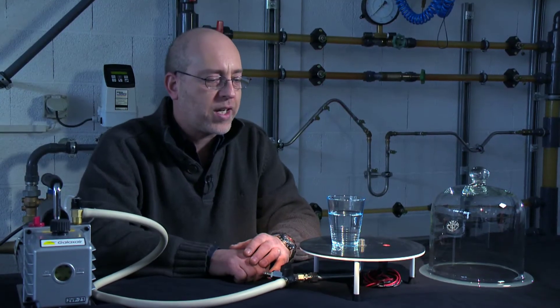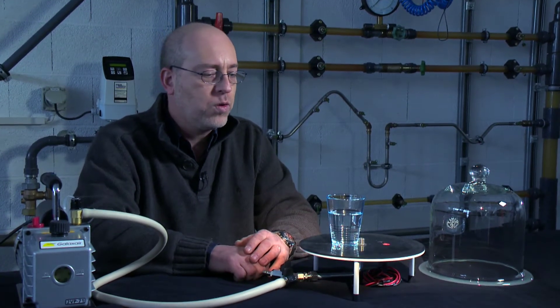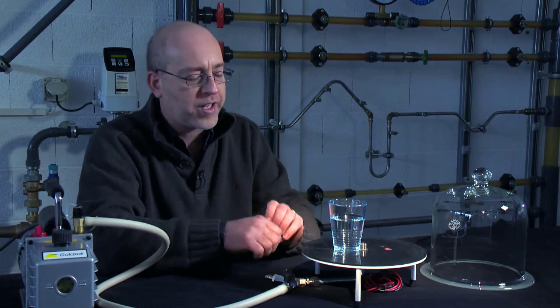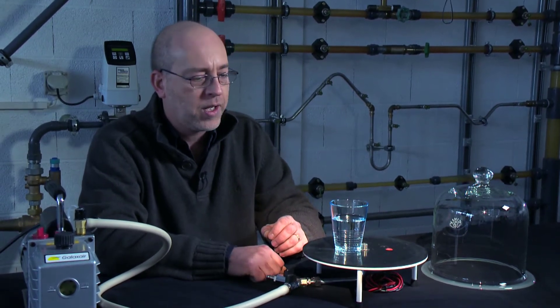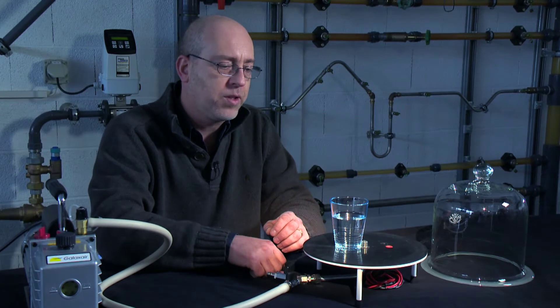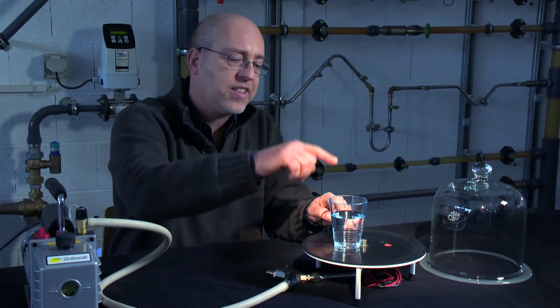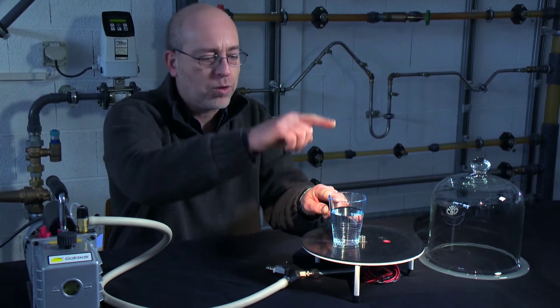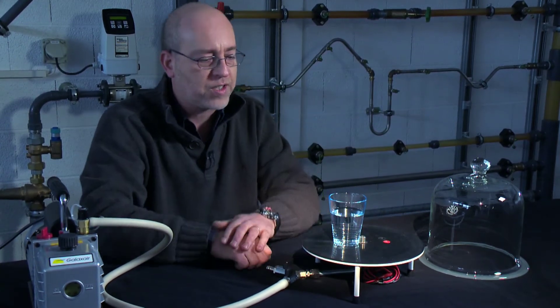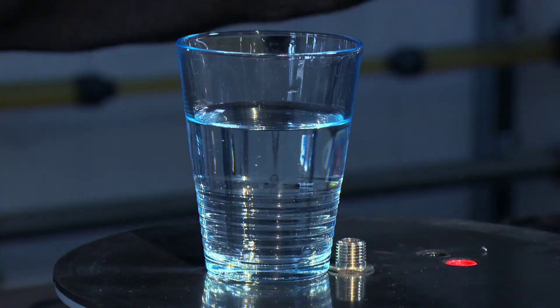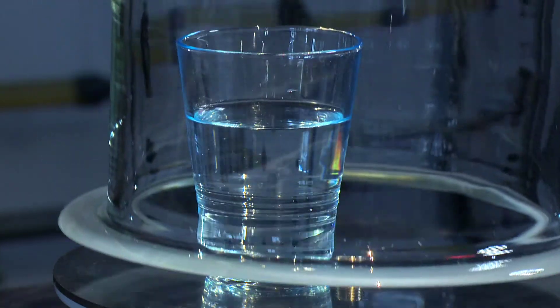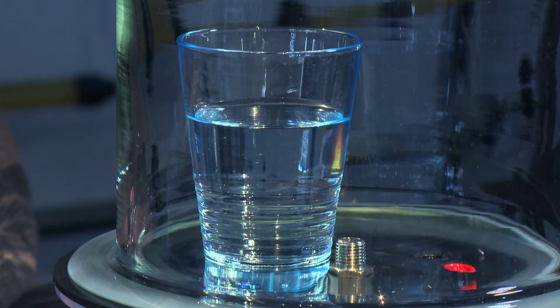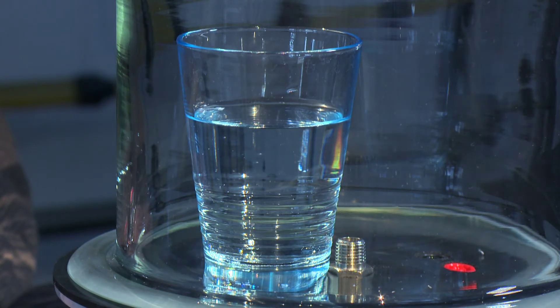Pour expliquer ce qui peut arriver dans une conduite de mazout, nous allons voir ce qui se passe lorsque l'on crée le vide autour d'un récipient rempli d'eau froide. La température d'ébullition de l'eau dépend de l'altitude, autrement dit de la différence de hauteur de la colonne d'air se trouvant au-dessus de la surface de notre liquide. Ainsi, en créant le vide dans cette cloche, nous allons réussir à faire bouillir, vaporiser de l'eau à température ambiante.